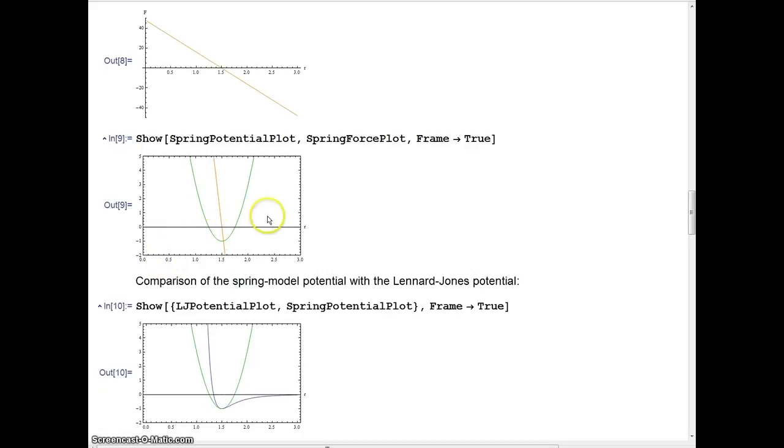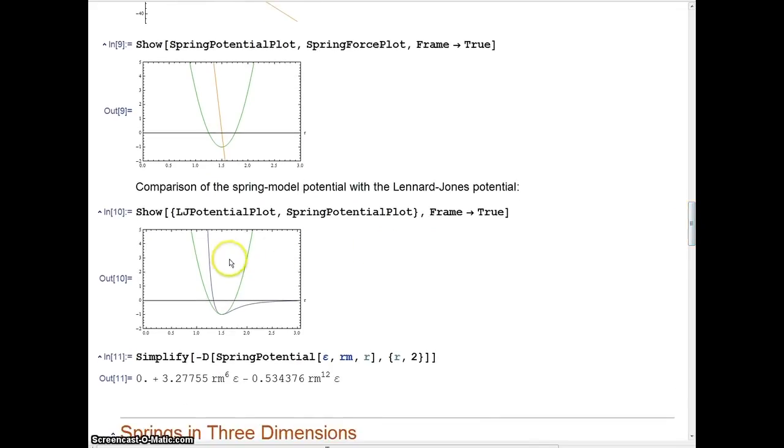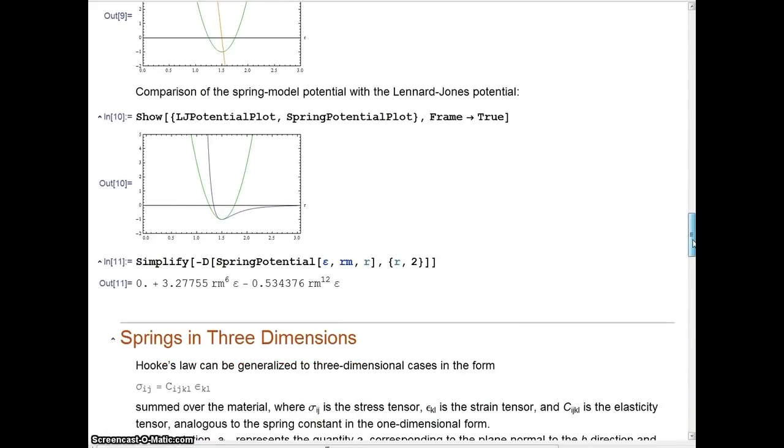And here's our approximate potential with the actual Lennard-Jones potential, so you can see that it's not a very good approximation, but very small displacements on the order of 0.1 times that minimum distance will probably be okay. I simplified it here and then take a derivative again, just so I can get that slope, and that'll be useful later.